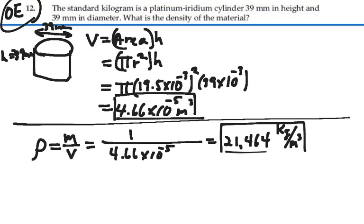of this platinum iridium cylinder. It's pretty dense. It's more dense than gold. 21,464 kilograms per cubic meter. Answer.